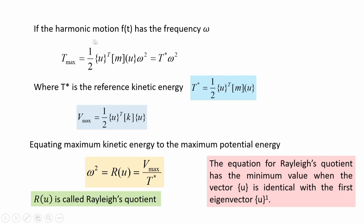Harmonic motion is assumed in free vibration, with frequency omega. For a multi-degree-of-freedom system, T_max for a particular eigenvector u is: T_max = (1/2) u^T M u · ω². Since kinetic energy requires velocity squared, and if f(t) = A sin(ωt), then the velocity is Aω cos(ωt), and the maximum value of cos(ωt) is 1, giving the amplitude of velocity squared as A²ω².